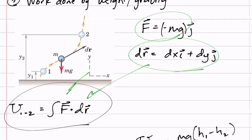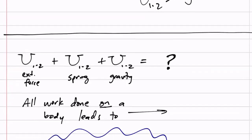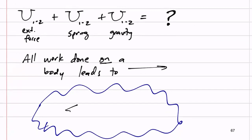The work done by gravity only depends on the initial height and the final height. It doesn't matter left and right; it doesn't matter if the object went somewhere and came back — it's initial and final. We can add up all the work done by forces, plus the work done by a spring, plus the work done by gravity, and it all leads to the right-hand side of this equation. What do you think the right-hand side might be? The sum of all the work equals something.